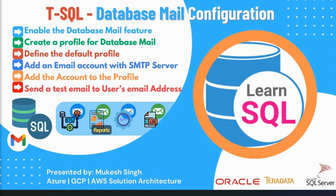Let's move to our SQL Server environment. There are around six steps to set up database mail configurations. First, enable the database mail feature. Second, create a profile for database mail. Third, define the default profile which will be used to send emails to end users, business users, and analytics users. Fourth, add an email account with SMTP server details. Fifth, add this account to the profile. And sixth, we are going to test how this feature works and sends an email to users.